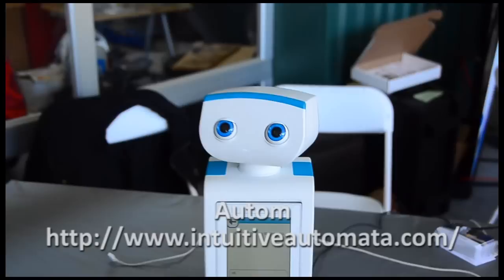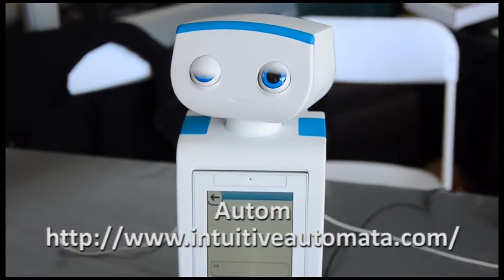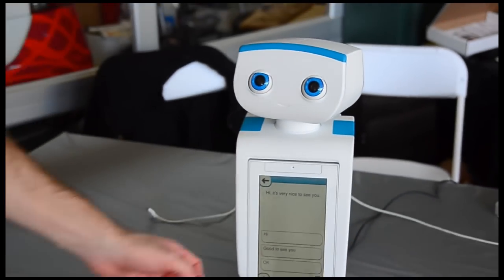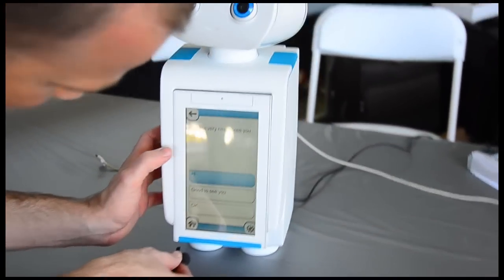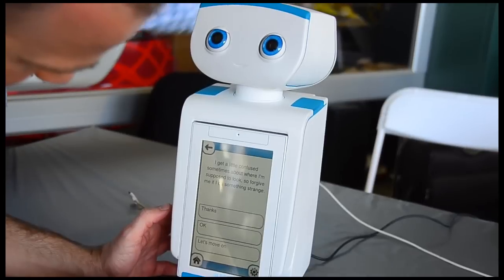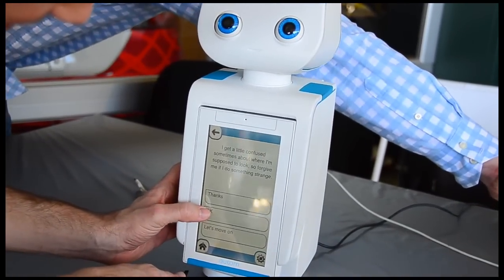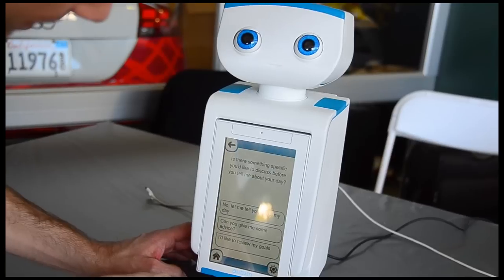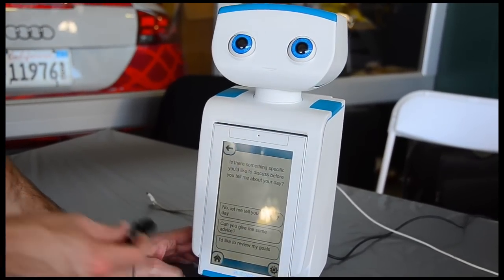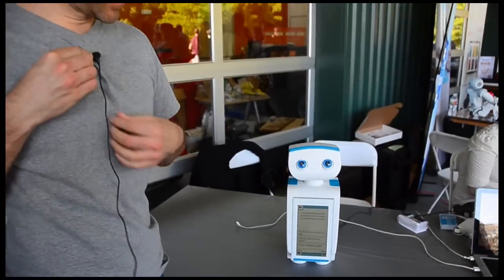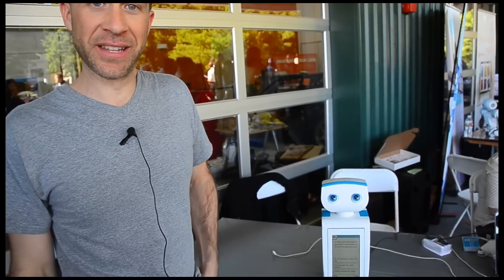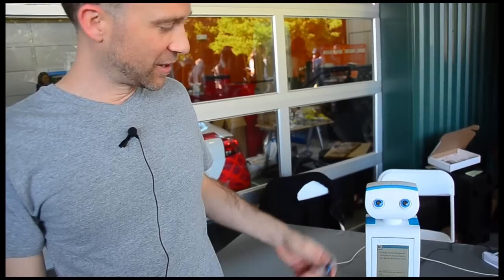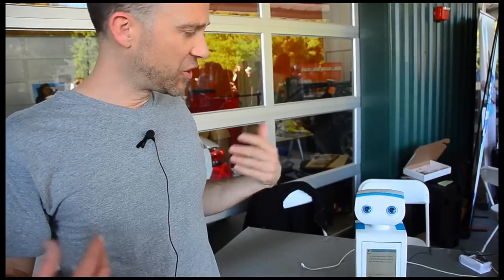I'm Corey Kidd, the founder and CEO of Intuitive Automata. And this is Autumn, our weight loss coach. So Autumn has a daily conversation with me about eating, exercise, and weight. And gives me customized feedback and advice. So she speaks aloud. I get a little confused sometimes about where I'm supposed to look. So forgive me if I do something strange. Is there something specific you'd like to discuss before you tell me about your day? So she'll have a short conversation with me. She'll ask about how well I've eaten, how much exercise I've gotten, my weight. And I can also integrate other devices. So for example, the Fitbit in my pocket can tell her automatically how many steps I've taken, my wireless bathroom scale.